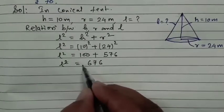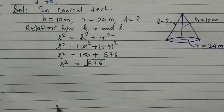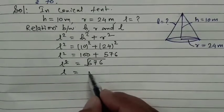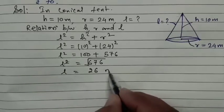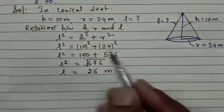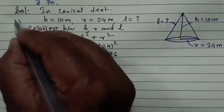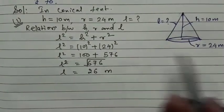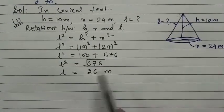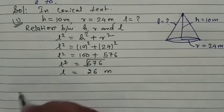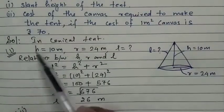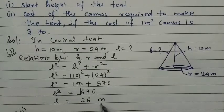Removing the square from the left side, we get a square root on the right. So l = √676, which equals 26. So the value of l has come out — the slant height, which was our first part, is 26 meters. This is now solved. Part 1 asked for the slant height, which is 26 meters.